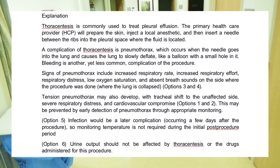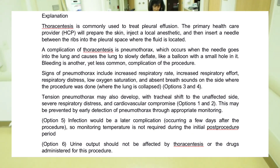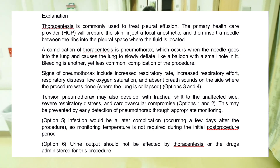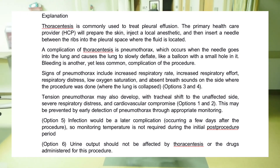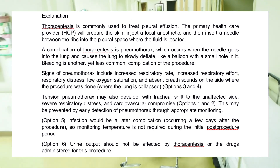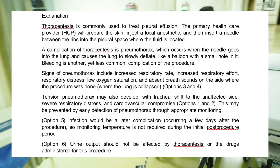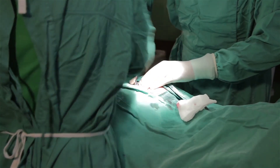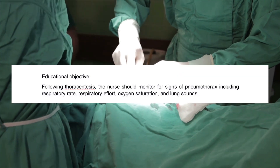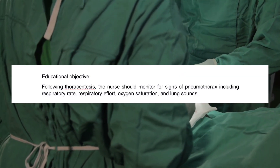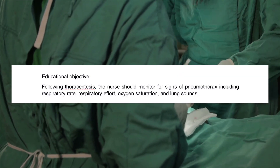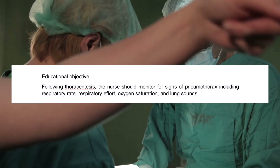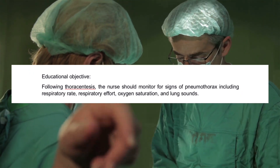Option 5: Infection would be a later complication occurring a few days after the procedure, so monitoring temperature is not required during the initial post-procedure period. Option 6: Urine output should not be affected by thoracentesis or the drugs administered for this procedure. Educational objective: Following thoracentesis, the nurse should monitor for signs of pneumothorax, including respiratory rate, respiratory effort, oxygen saturation, and lung sounds.